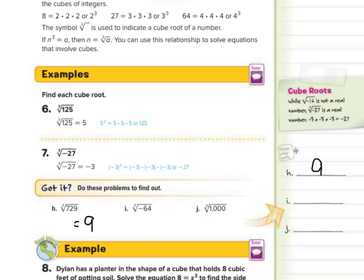Then the cube root of negative 64 — not the square root, but the cube root. What times what times what is 64? That was 4, as we saw above. So this answer is going to be negative 4. What about the cube root of 1,000? We just worked that out: 10 times 10 times 10 is 1,000, so this is going to be 10.